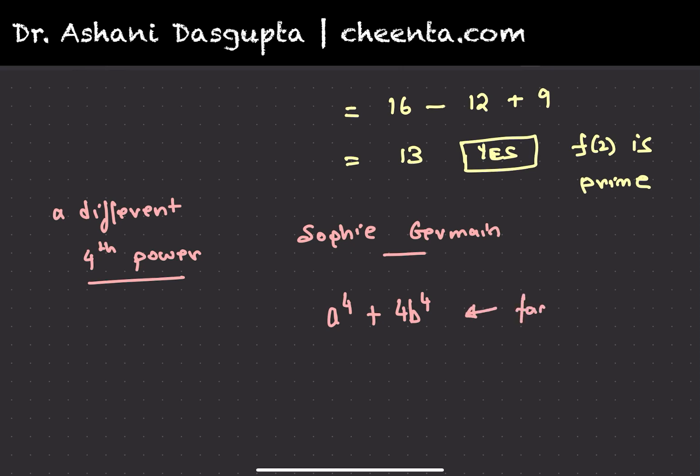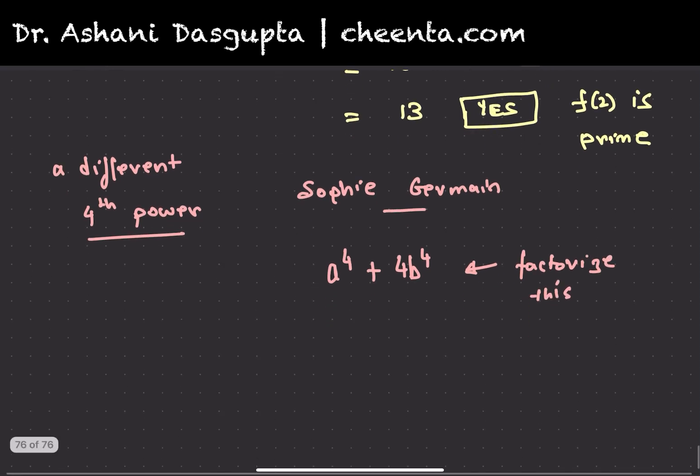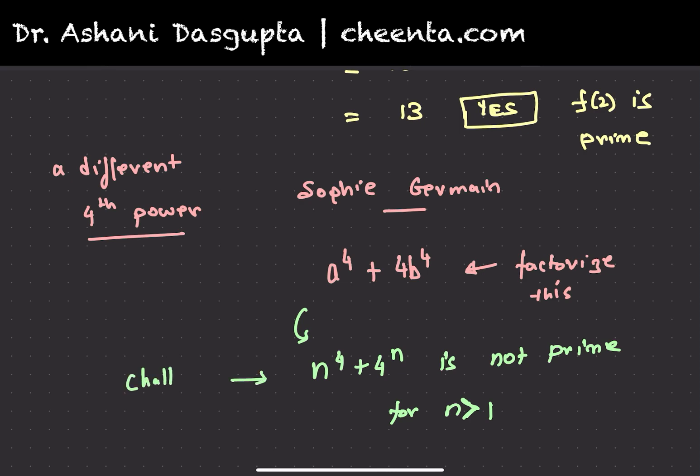If you can, put it in the comment section. Try to factorize this. And using that, can you show that n^4 + 4^n is not prime for n greater than 1? This is also a challenge. You can put it in the comment section.